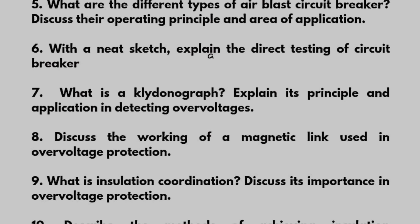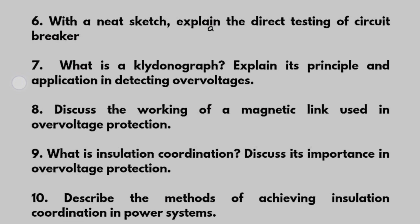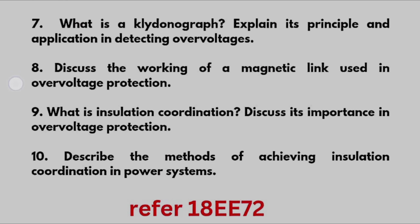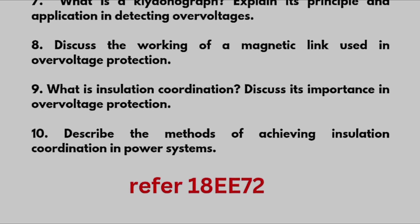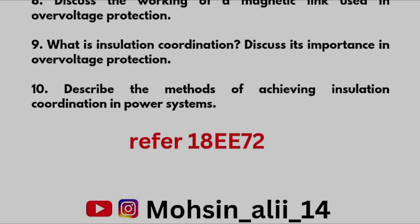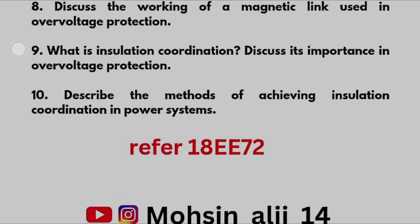What are the different types of air blast circuit breakers? Discuss their operating principle and area of application. With a neat sketch, explain the direct testing of a circuit breaker. What is a klydonograph? Explain its principle and application in detecting overvoltages. Discuss the working of a magnetic link used in overvoltage protection. What is insulation coordination? Discuss its importance in overvoltage protection and describe the methods of achieving insulation coordination in power systems. You can refer 18EE72 for Module 5 as well.